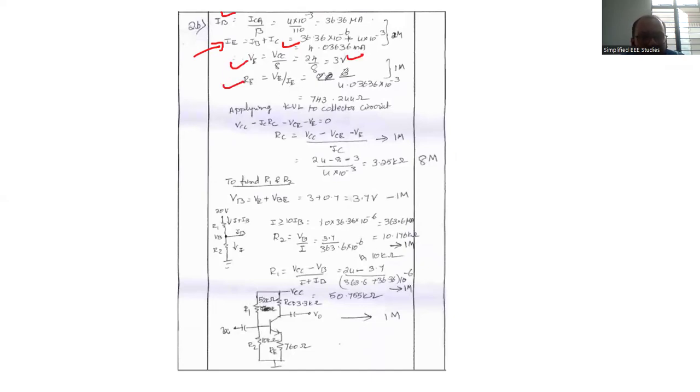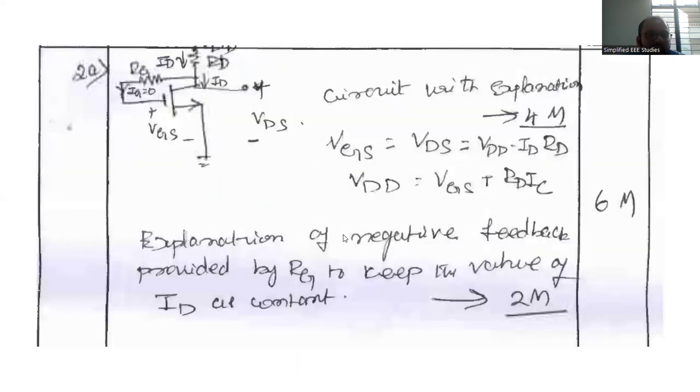RE will be VE divided by IE. You will be getting almost 743 ohm. You can go for standard value procedure also. Applying the KVL, you should have a good idea about KVL. Then RC you have to compute, RC will be 3.25 kilo ohm. So find R1 and R2. Use the formula VB equals VE plus VBE, it will be 3.7 volt. R2 you have to calculate, R1 also you have to compute. Ultimately you have to draw the diagram also. These are the various steps involved. If you want you can pause the video and note down the steps. Kindly verify whether the answer is correct or not. This is a broad calculation. You have to verify whether the answer is matching.